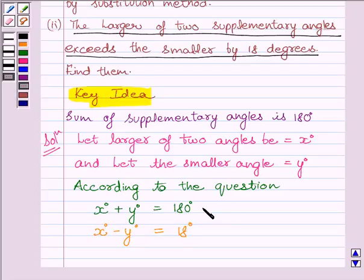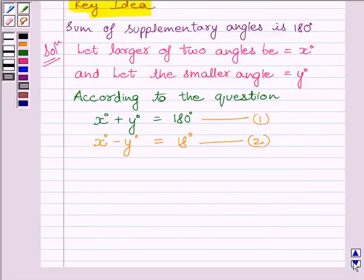Let us now name these equations as equation number 1 and equation number 2. Now, from equation 2, we get the value of x is equal to 18 plus y.